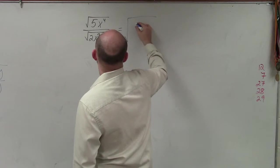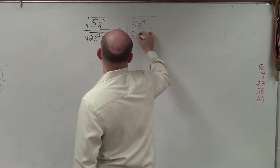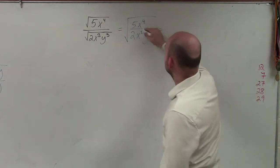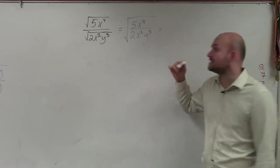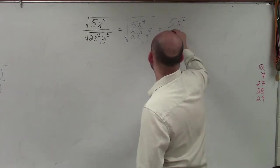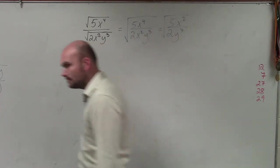So if you guys go ahead and divide, you'd have 5x to the fourth over 2x squared y cubed, right? Well, if you guys are going to simplify this, you could do x to the fourth divided by x squared, which would leave you with x squared. So basically, I have 5x squared divided by 2y cubed.